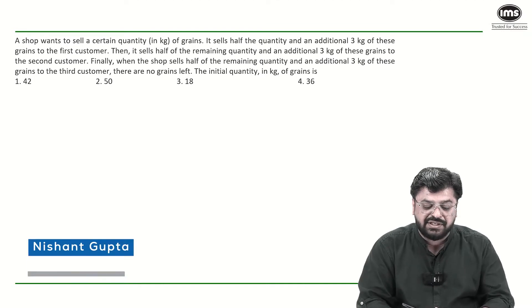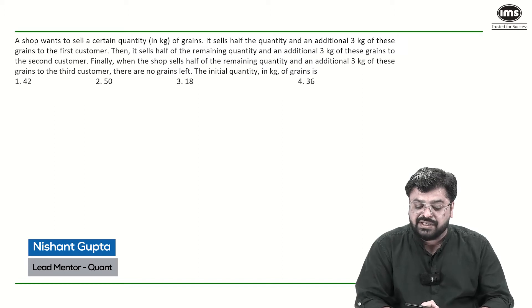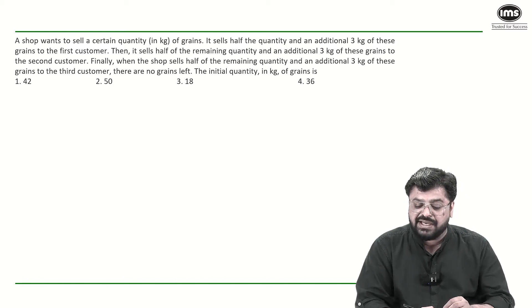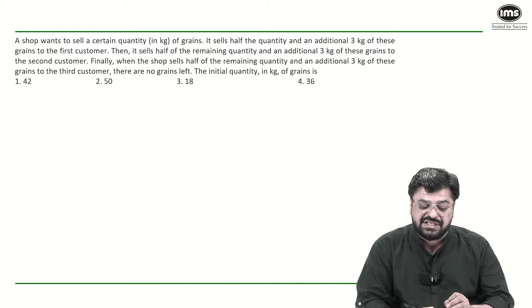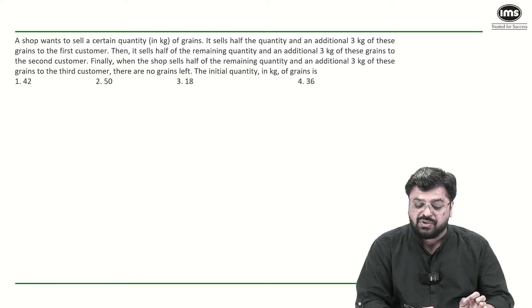A shop wants to sell a certain quantity in kg of grains. It sells half the quantity and an additional 3 kg of these grains to the first customer. Then it sells half of the remaining quantity and additional 3 kg of these grains to the second customer. Finally, when the shop sells half of the remaining quantity and an additional 3 kg of these grains to the third customer, there is no grain left. So, the initial quantity in kg of the grain is...